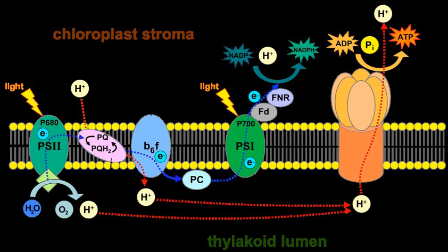In photosynthesis, the light-dependent reactions take place on the thylakoid membranes. The inside of the thylakoid membrane is called the lumen, and outside the thylakoid membrane is the stroma, where the light-independent reactions take place.